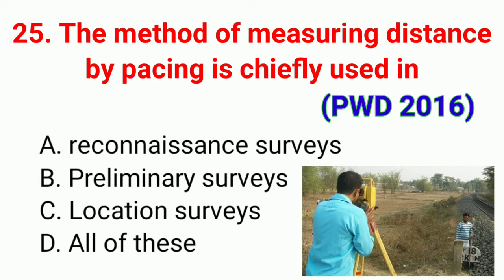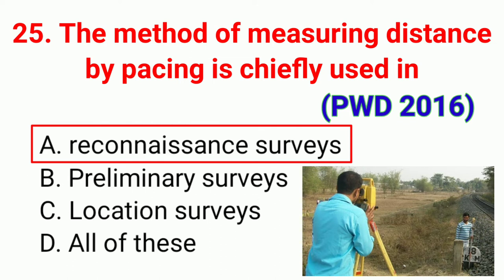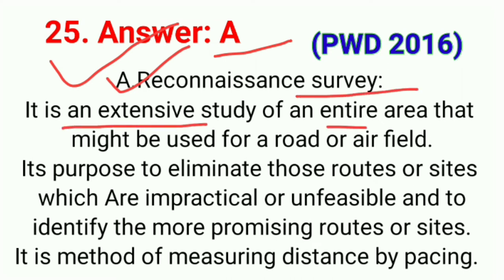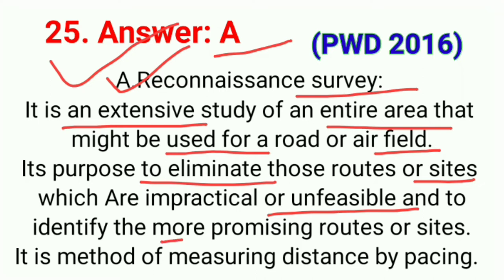Question number twenty-five: The method of measuring distance by pacing is chiefly used in. The correct answer is option A, reconnaissance surveys. Reconnaissance survey is an extensive study of an entire area that might be used for a road or airfield. Its purpose is to eliminate impractical routes and identify promising ones. Pacing is the method of measuring distance used in reconnaissance surveys.